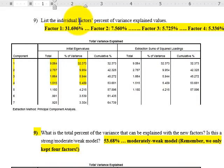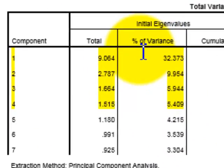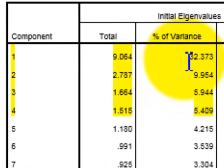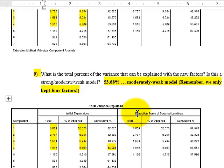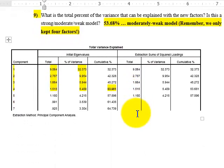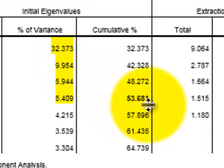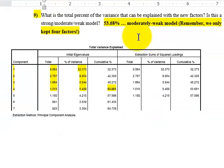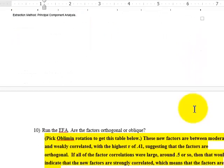We want the 4 individual factors, the percent of variance for each one of these. And that's what these are right here in this column. The percent of variance that each factor is responsible for. So we just listed them up there. And then question 9 is what is the total percent of the variance that can be explained by our 4 factors? That is this cumulative number right here. So about 53.68%. It's not the strongest model in the world, but it's somewhere between moderate and weak.